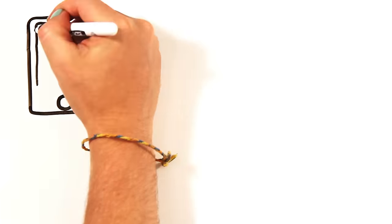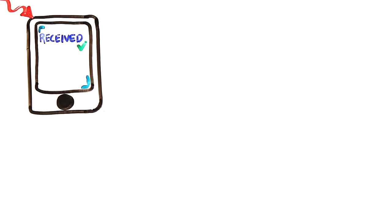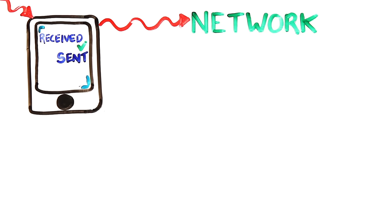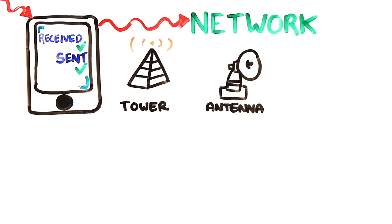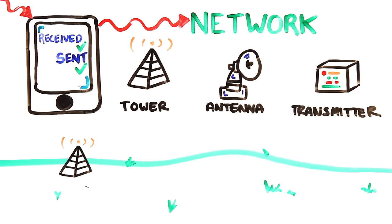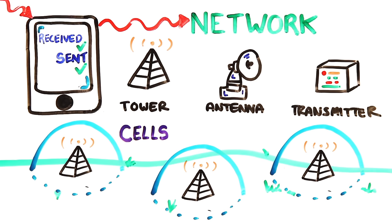Similar to a radio, your cell phone receives signals at specific frequencies, but it can also transmit its own radio waves back to a network at the same time. The network is a system of towers, antennas, and transmitters, which divide a geographical area into cells, hence the term cell phone.